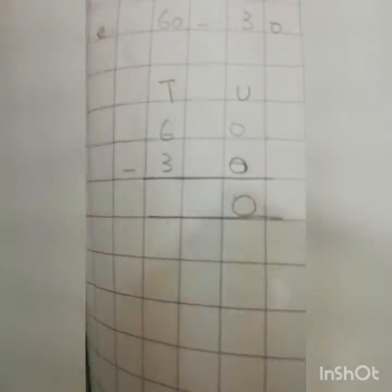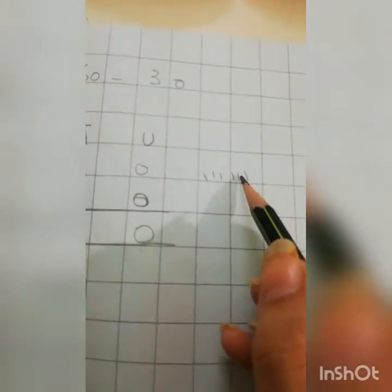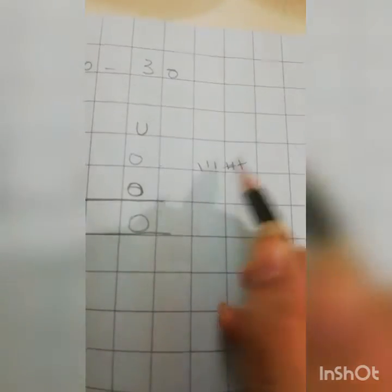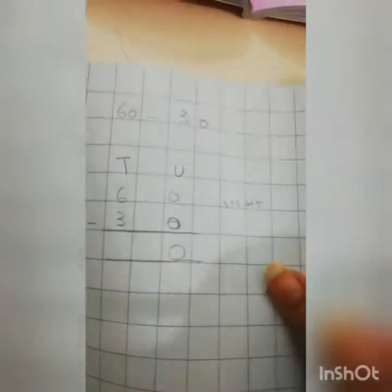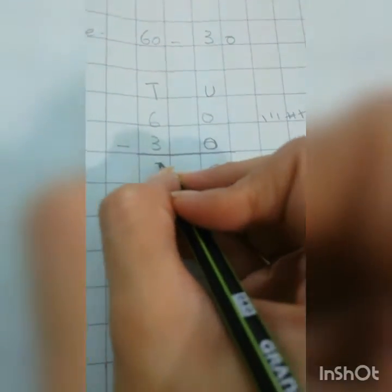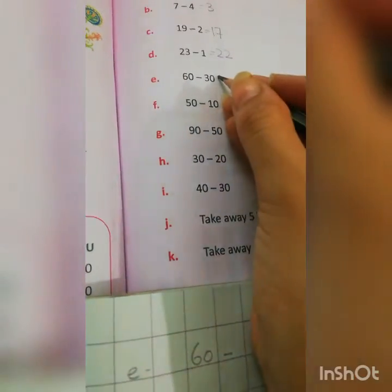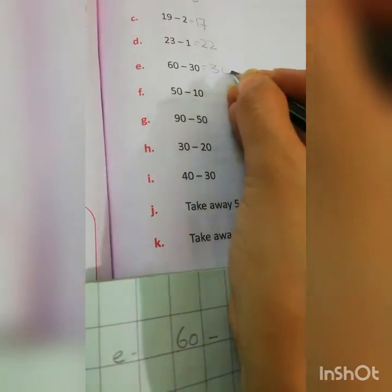And 6 minus 3 — this is so simple. Draw 6 lines, minus 1, 2, 3. Remaining is 3. We only subtract 10s. So the answer is 30. The answer is 30. You can write the answer here as well: 30.